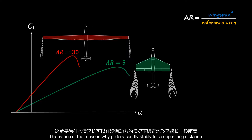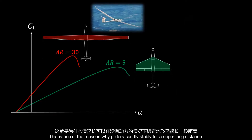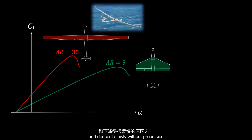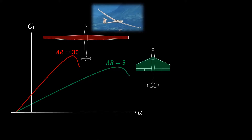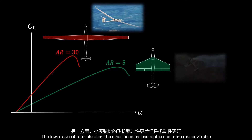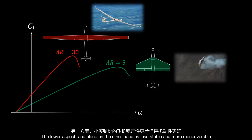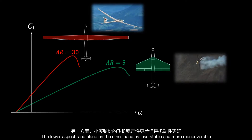This is one of the reasons why gliders can fly stably for a very long distance and descend slowly without propulsion. The lower aspect ratio plane, on the other hand, is less stable and more maneuverable.